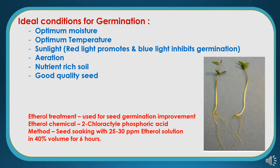We can also go for treatment with certain chemicals which enhance germination, like ethrel treatment, which is used for seed germination improvement. Ethrel contains the chemical 2-chloroethyl phosphoric acid. Seeds are soaked with 25 to 30 ppm ethrel solution in 40 percent volume for six hours. After drying, the seeds can be used for sowing, where we can observe improved germination conditions.